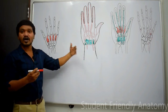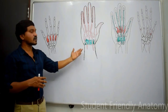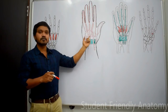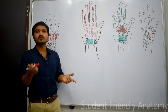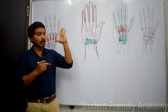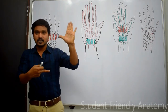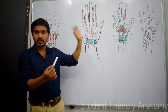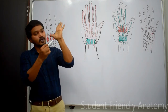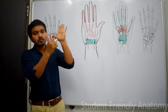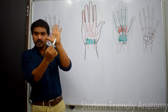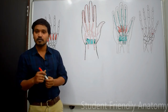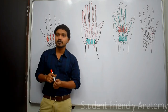For surface marking: a line along the distal margin of the outstretched thumb represents the superficial palmar arch, and a line along the proximal border of the outstretched thumb represents the deep palmar arch. The deep palmar arch lies approximately 1 cm proximal to the superficial palmar arch.